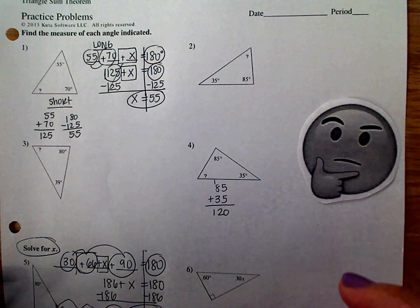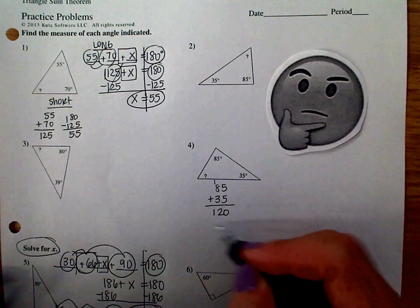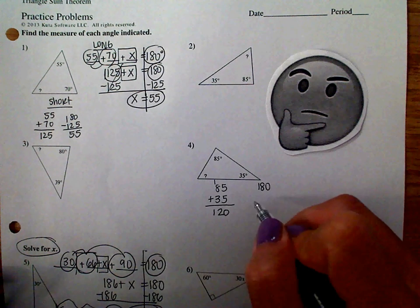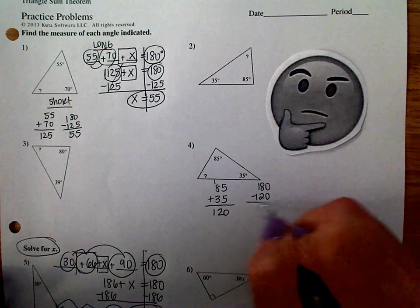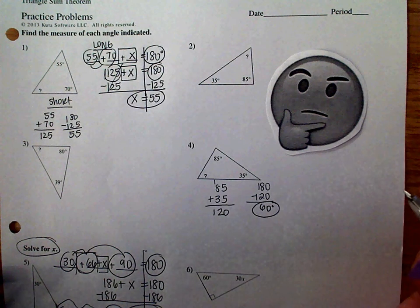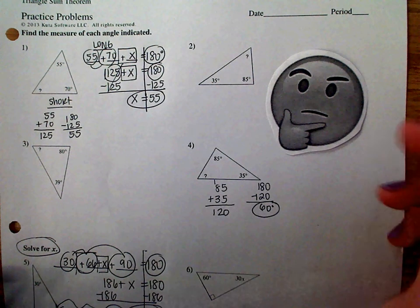So then, since those are the two angles, to find the third angle, you're going to take 180, which is what they add up to be, subtract the 120, the sum of these two angles, to find the third angle. And in this case, it's 60 degrees. All right, so that's that.